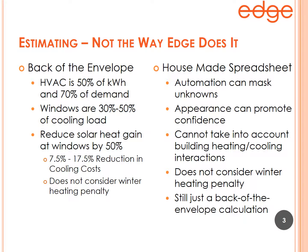For example, your HVAC is 50 to 70% of your consumption and 70% of your demand. Another rule of thumb is that your windows account for 30 to 50% of your cooling load. Consider that alongside a window film specification that reduces solar heat gain by 50%, and you can start extrapolating: 50% × 30% × 50% on the low end, or 70% × 50% × 50% on the high end.